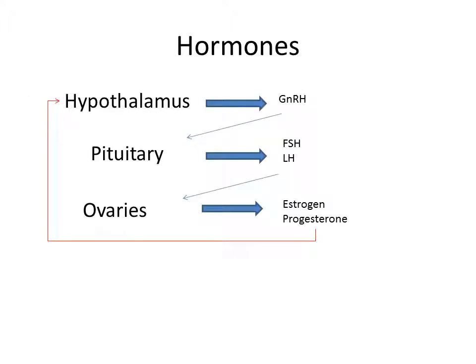The hormones involved are gonadotropin releasing hormone (GnRH), which is released by the hypothalamus. This acts on the pituitary, which releases follicle stimulating hormone (FSH) and luteinizing hormone (LH). These hormones in turn act on the ovary, which creates estrogen and progesterone, and this has a negative feedback on the hypothalamus — decreasing GnRH and setting up the next cycle.